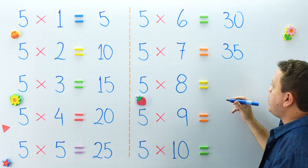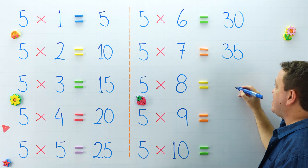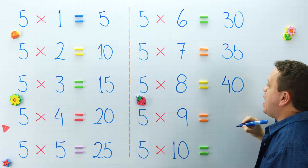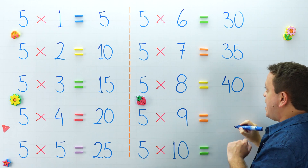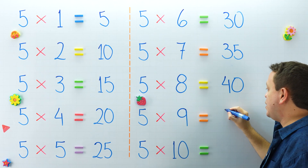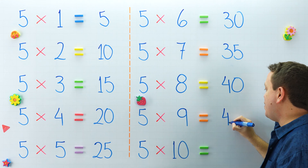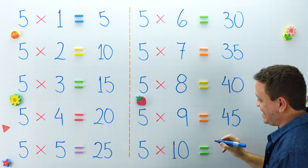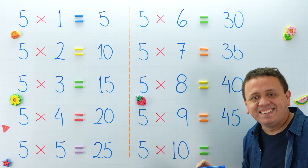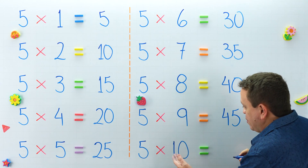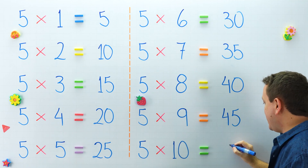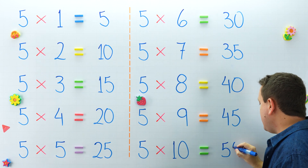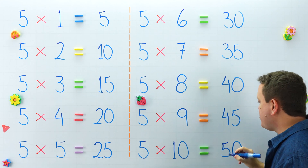5 times 8 equals? And 5 times 9 is equal to 45. And last but not least, 5 times 10 equals 50.